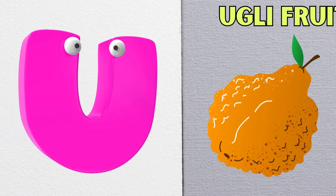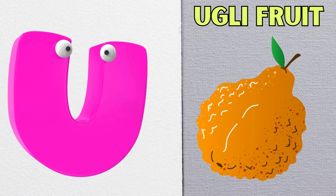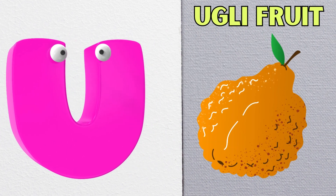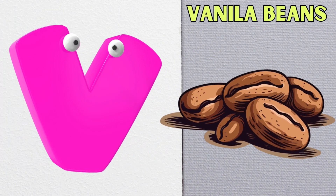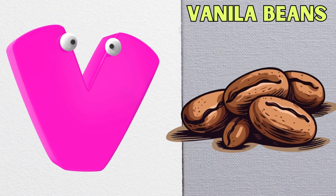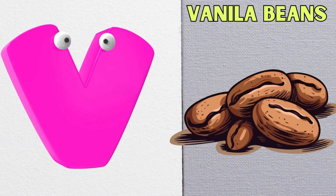U is for ugly fruit, u-u-ugly fruit. V is for vanilla beans, v-v-vanilla beans.